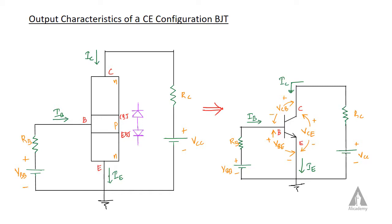We have three currents: emitter current, base current as the input current, and collector current as the output current. Basically, the transistor structure is like two diodes connected in opposite direction, that is in series.